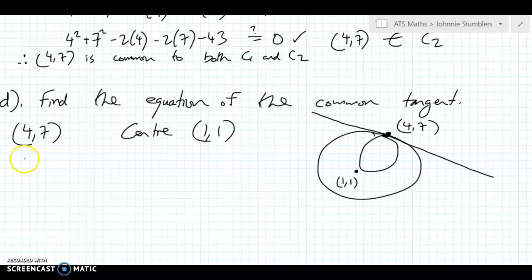So we know that 4, 7 is on the line of the common tangent. The common tangent is just a line. And this is at right angles to this radius here between 1, 1 and 4, 7.